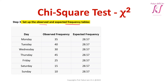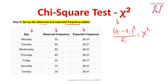Step 3 is to set up the observed and expected frequency table. Here we have the days, the observed frequency for each day as given in the question, and the expected frequency of 28.57 which we calculated in Step 2. The basic formula for the chi-square test is: (observed frequency minus expected frequency) squared, divided by expected frequency. For Monday: (35 − 28.57)² ÷ 28.57.